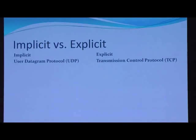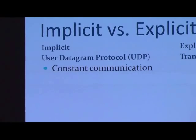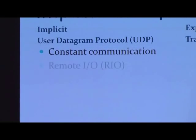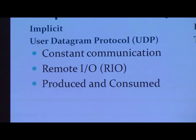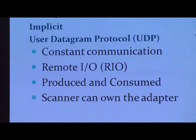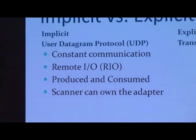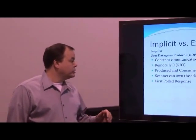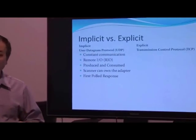First, let's talk about implicit messaging. It uses the User Datagram Protocol, or UDP, and it is a constant, continuous connection between the Ethernet IP adapter and scanner. A common form you'll probably see is a remote I/O connection or, for Rockwell products, the producer/consumer tags. In this model, the scanner owns the adapter — the adapter looks for a first-poll-response master in order to communicate.